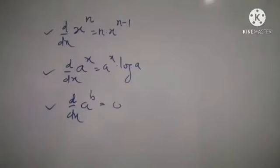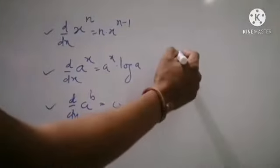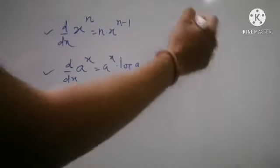We define these base index forms for derivatives. In the first form, x is the base and n is a constant in the index. In the second case, a is the base which is a constant and x is a variable at the index. In the third case, a and b are both constants — a in the base and b in the index. Now what happens when a term is given as x raised to x?